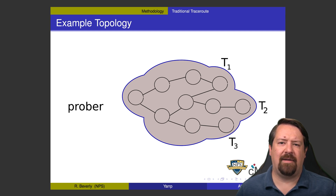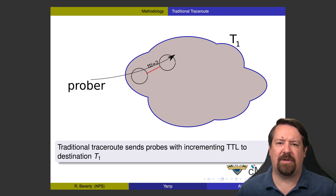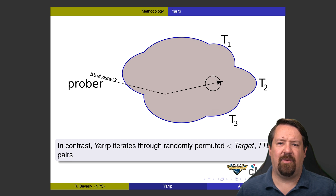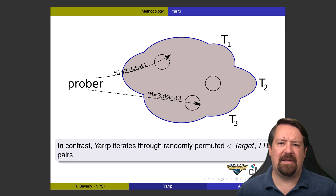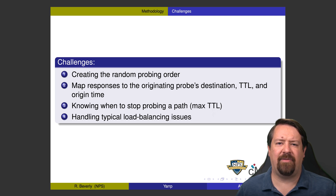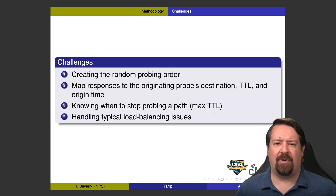Here's an example of how it works. We have one prober and multiple targets. The prober sends out a TTL 2 message first, randomizing both TTL numbers and destinations. Then it sends TTL 4 for the same destination, then TTL 4 for target 2, and so on. Because it's a permutation, it won't send out duplicates — it will send the complete set of TTL and destination pairs in random order until it achieves the complete inferred map of the network. Putting the topology back together happens offline, where a separate process sorts the randomized results into traceroute-style paths. Challenges include creating this random probing order across millions or billions of destinations multiplied by the TTL space, mapping responses back without maintaining state, knowing when to stop probing a path, and handling load balancing issues as discussed with Paris Traceroute.